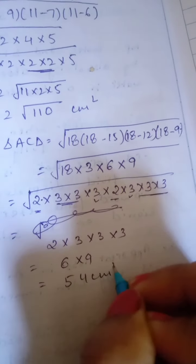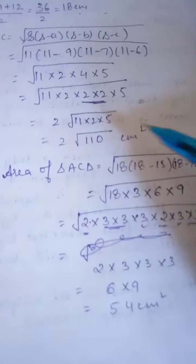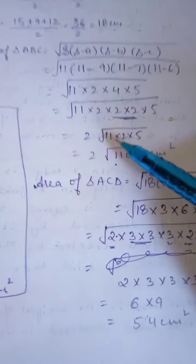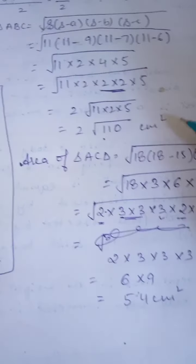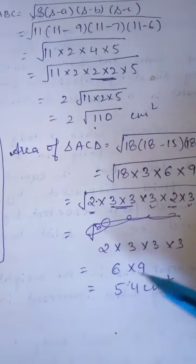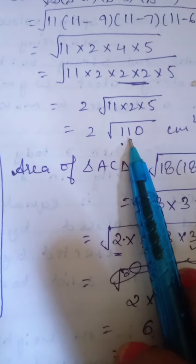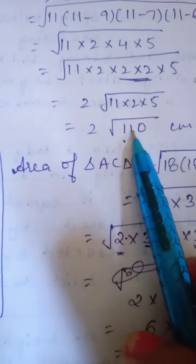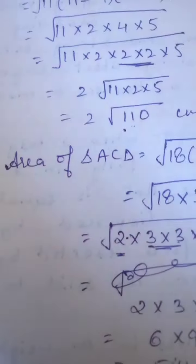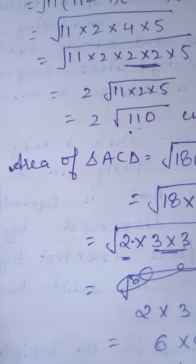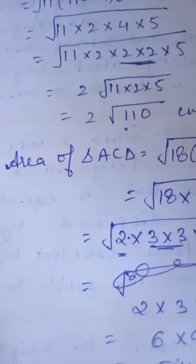Now you have the areas of both triangles: the first is 2√110 cm² and the second is 54 cm². To make the sum, firstly convert 2√110 — you have to calculate the square root of 110 using the division method.